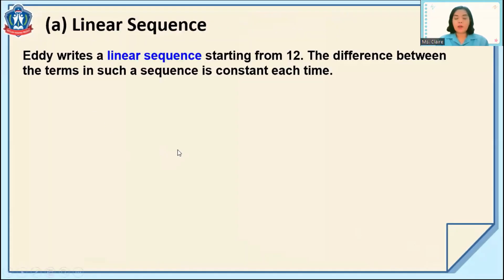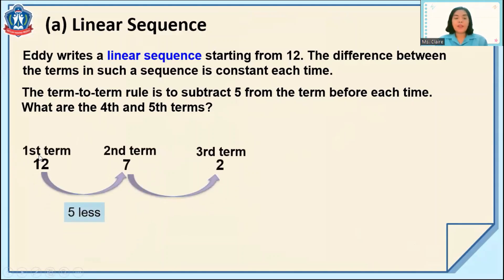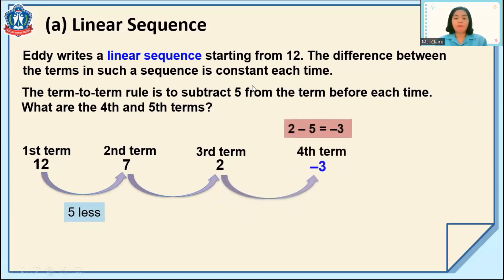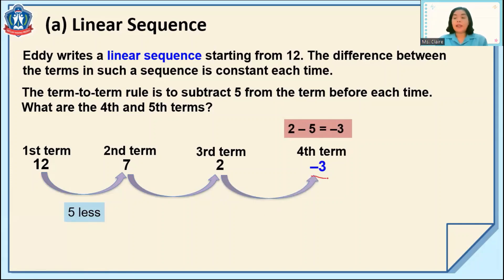Let's study about linear sequence. The term-to-term rule is to subtract five from the term before. So what are the fourth and fifth terms? The first term is 12. We subtract five and it becomes seven. Then seven minus five is two. So if our term-to-term rule is to always subtract, two minus five — remember the number line — the answer now becomes negative three.